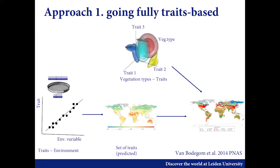I would like to give you three examples, or three different approaches, in which people have been trying to work on this. The first thing we tried — and I was quite enthusiastic about it ten years ago — is: let's get rid of plant functional types. We know trait variation, so if you can predict the trait variation in space and link your ecological or eco-physiological functions to it, you'll be doing fine. That was kind of the idea we started with.